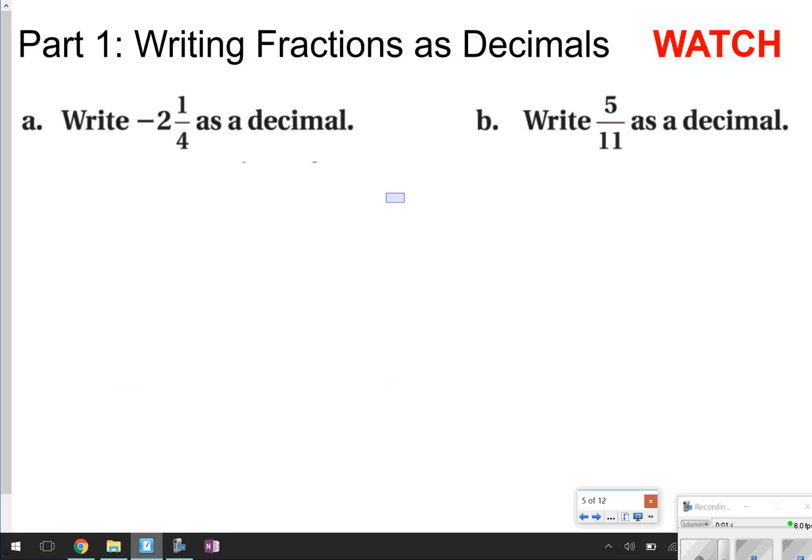Here's the first part about how to write fractions as decimals. And this part you might already know about before. The first one's really easy, because 1/4 is a common decimal. 1/4, we know, is equal to 0.25. So if you've got this whole number with it, we just tack it on on the front. So negative 2 and 1/4 is the same thing as negative 2.25.